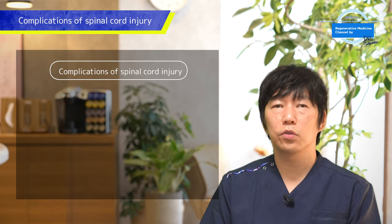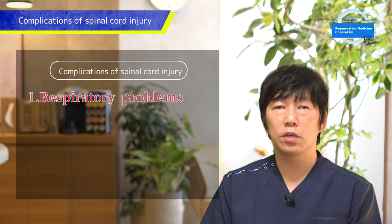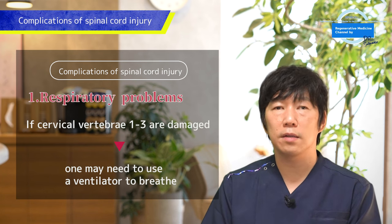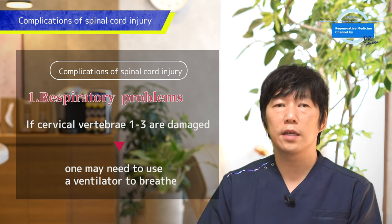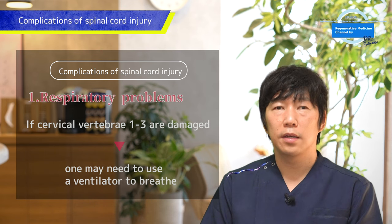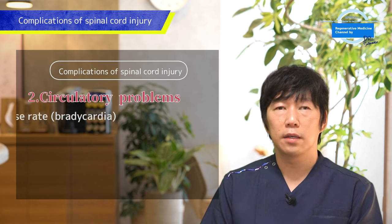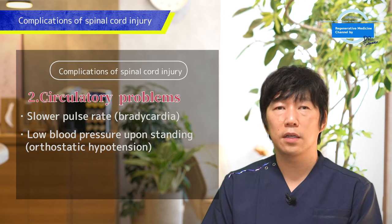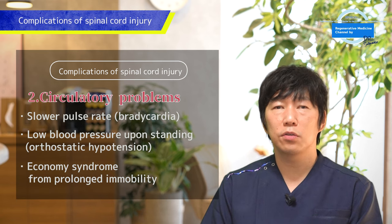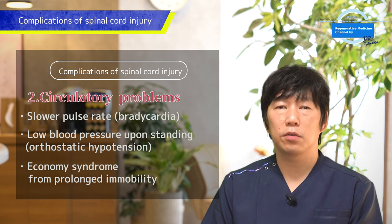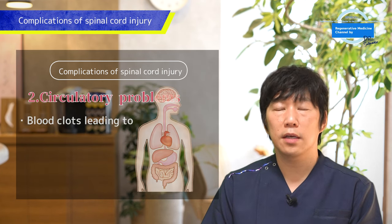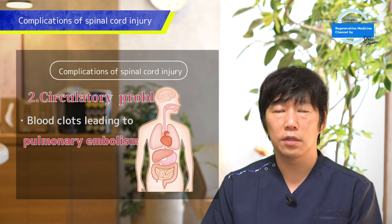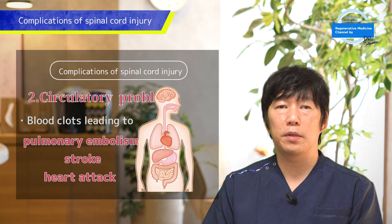As for complications of spinal cord injuries, the first is respiratory impairment. When the upper part of the cervical spine, from C1 to C3, is damaged, the muscles used for breathing become paralyzed and the person may need a breathing apparatus. The second is cardiovascular disorders, such as bradycardia and orthostatic hypotension. People with spinal cord injuries often spend a lot of time in the same position, leading to economy syndrome, which increases the risk of blood clots that can cause pulmonary embolism, stroke, or heart attack.